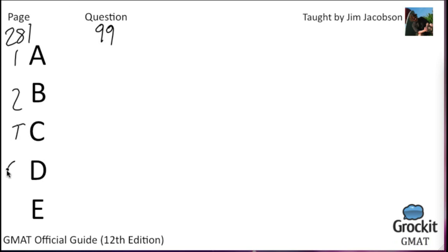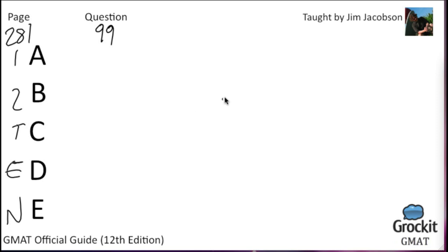As always, I write down on the side what each of the answer choices stands for. One means statement one alone is sufficient. Two means statement two alone is sufficient. T stands for together they're sufficient. E stands for either one is sufficient on its own. And N stands for neither — neither alone nor in combination is sufficient.